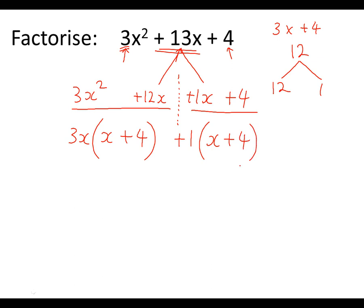And now we can use that for our answer. So what you notice is both of the brackets are x + 4. So that means that one of the brackets is x + 4 in our answer. And the other bracket is whatever's in front of these brackets. So it's 3x and +1.